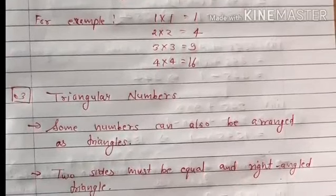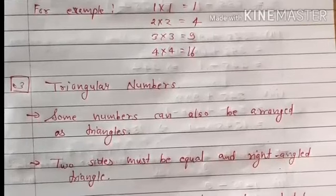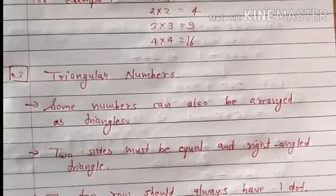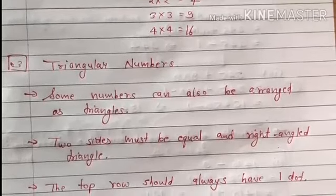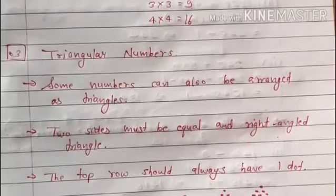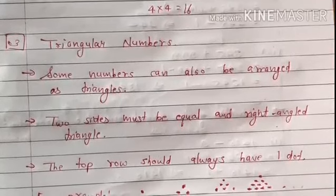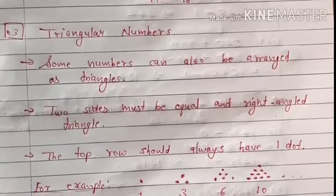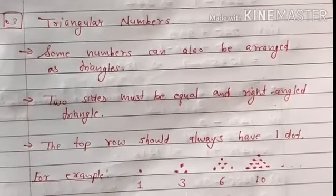Now, triangular numbers. Some numbers can also be arranged as triangles. Triangle की two sides equal होनी चाहिए, और इसमें एक right angle (90 degree) होना ज़रूरी है। इस तरह एक right angle triangle बनेगा जिसकी दो sides equal हों।